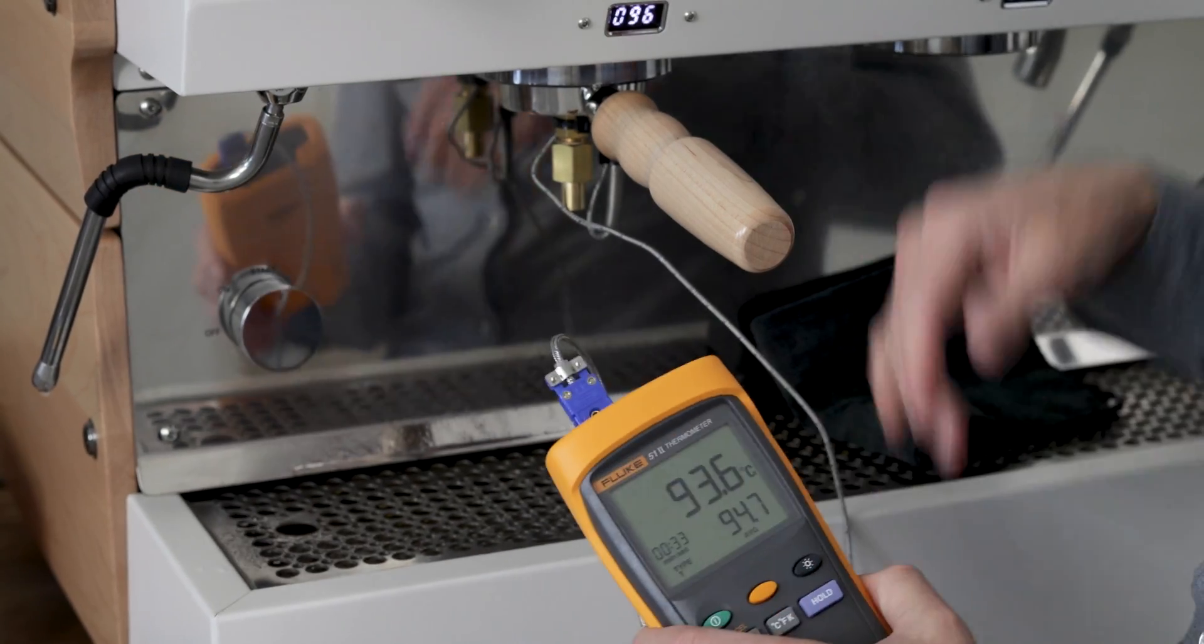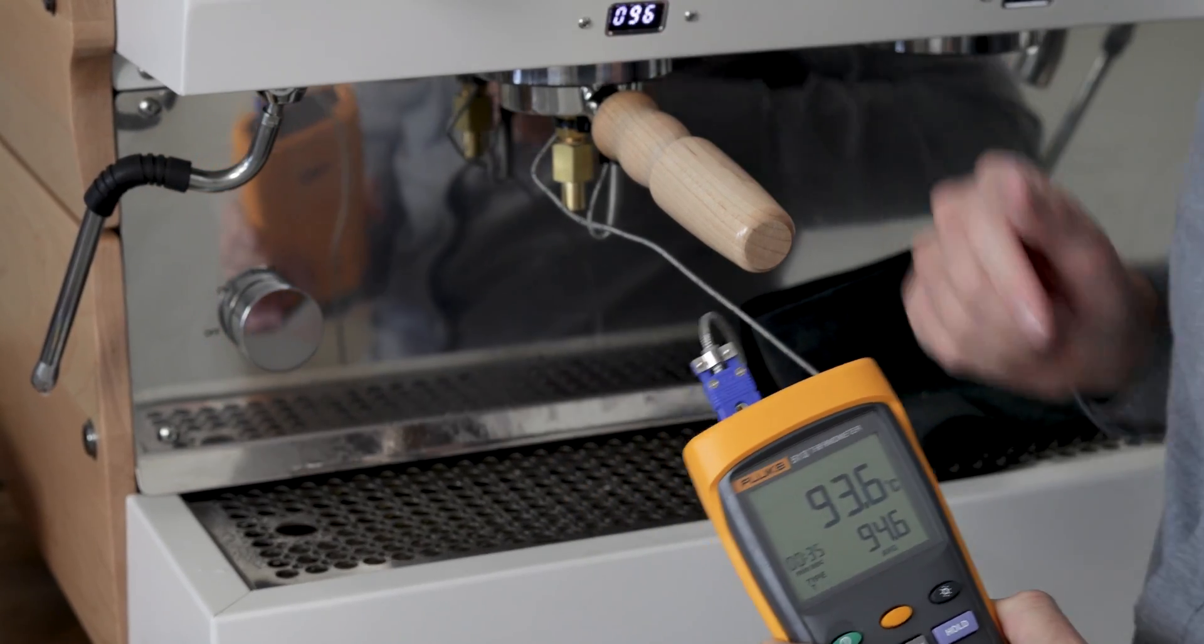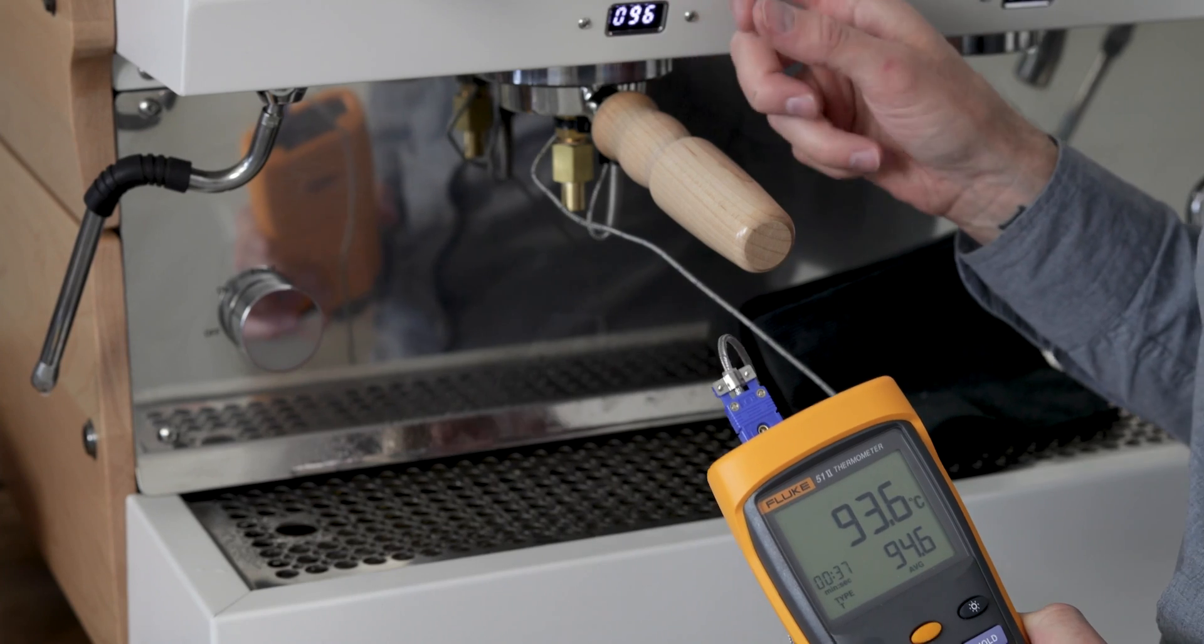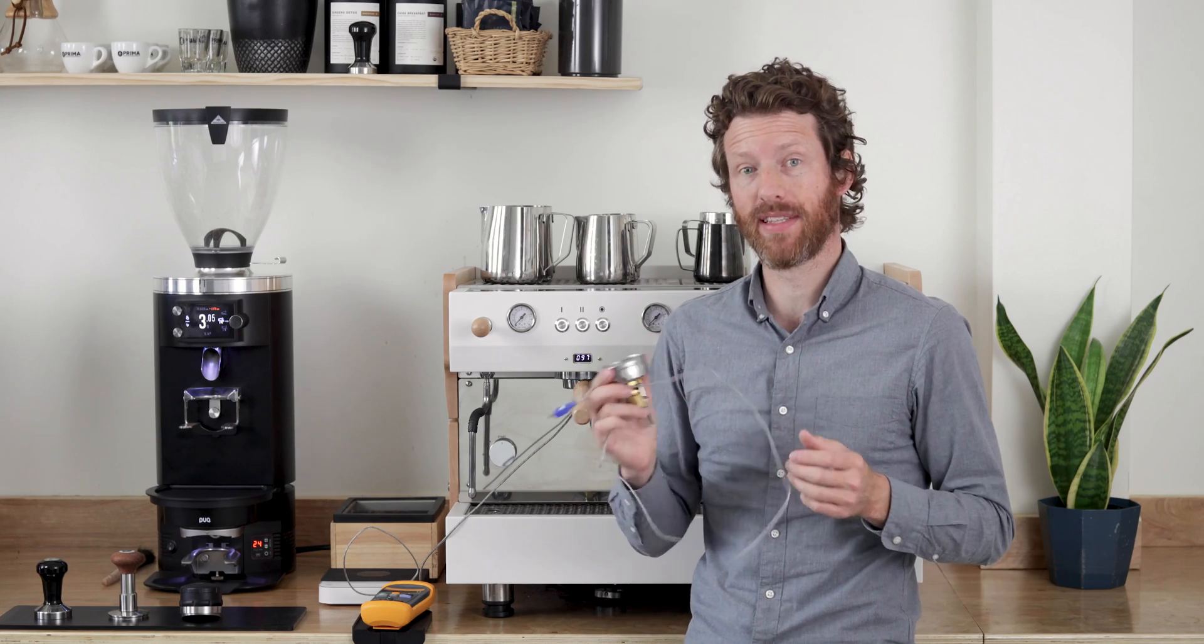But we've got our temperature here set at 96, so we know we're off by about a degree. So we'd probably go in here and set that offset. So that is the SCACE thermocouple device. You can find this online at primacoffee.com. Thanks for watching.